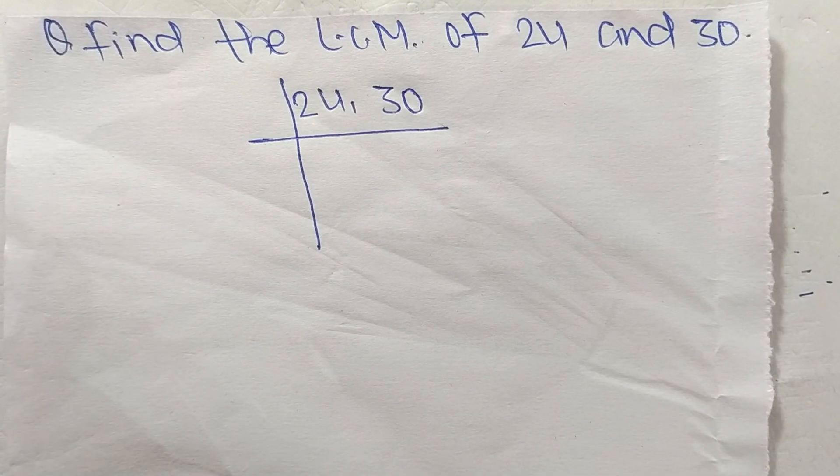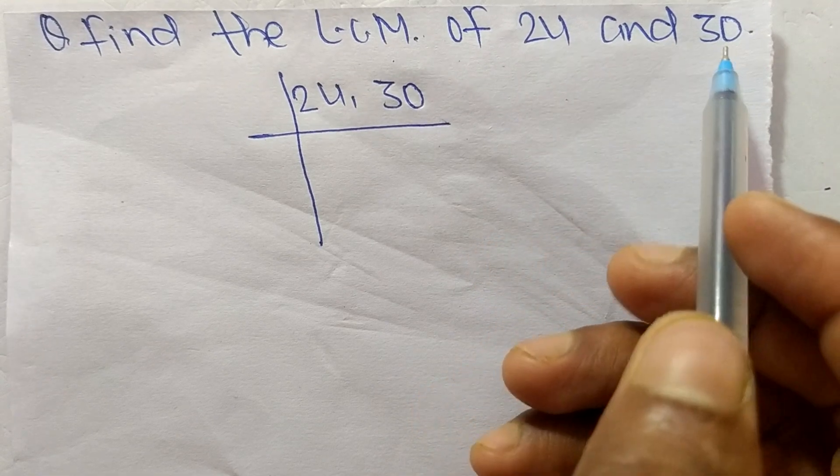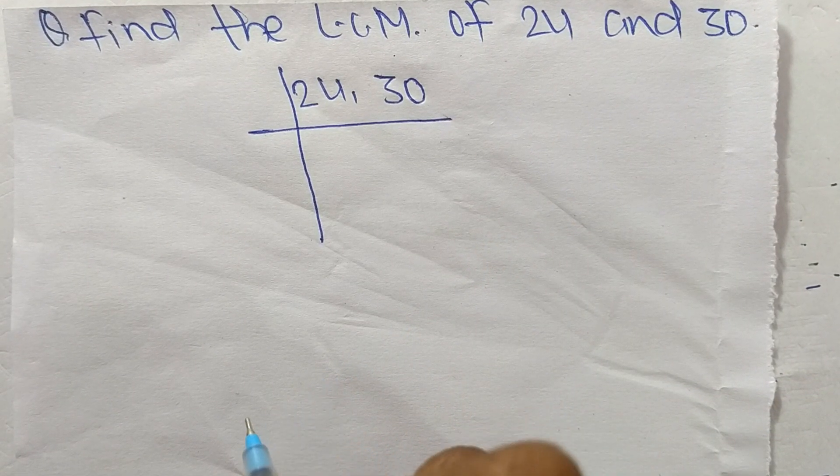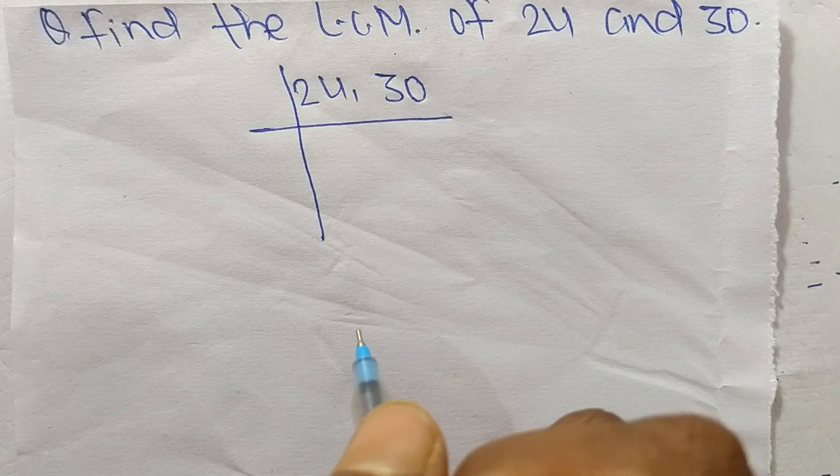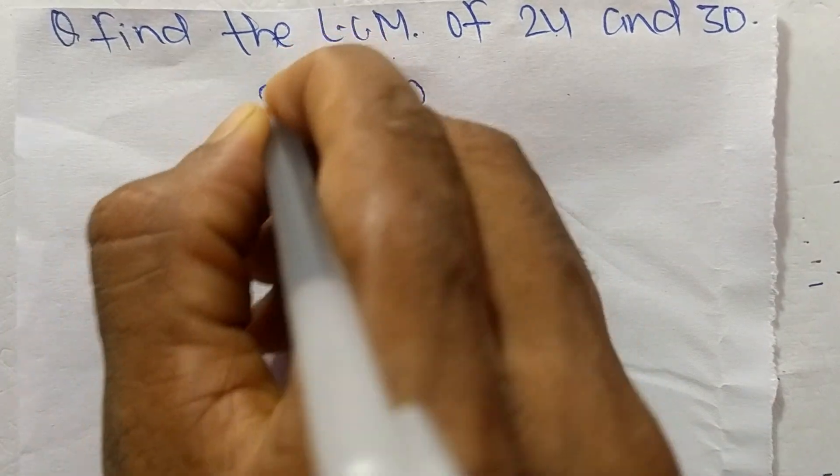So today in this video we shall learn to find the LCM of 24 and 30. To find LCM, first we have to choose the lowest number that can exactly divide 24 and 30, so the number is 2.